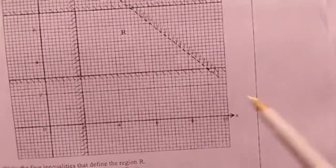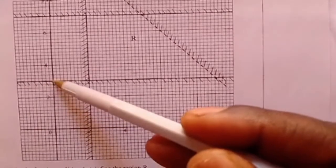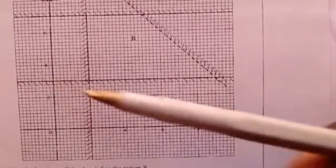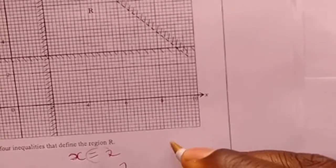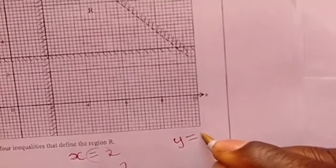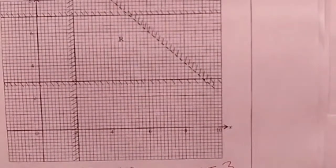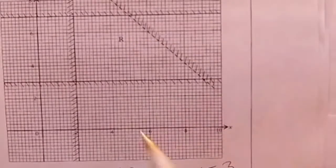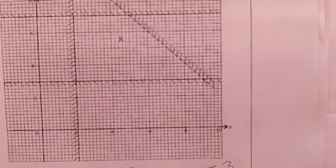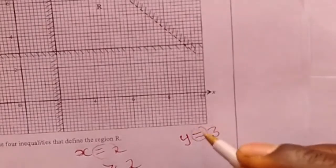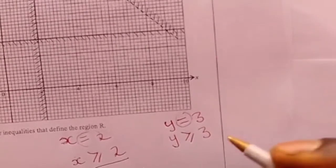We move on to inequality number 2. This line is horizontal which is passing through 3. Since it is passing through between 2 and 4, it means that this is 3. The 3 that is being cut is the 3 on the y-axis. Therefore, the equation of the line is y is equal to 3. The inequality is determined by the position of R. R is above the line. Above means greater. So y is greater than or equal to 3. This is the second solution.